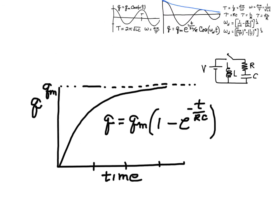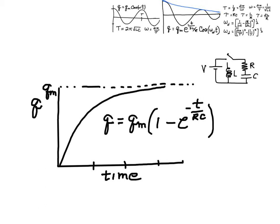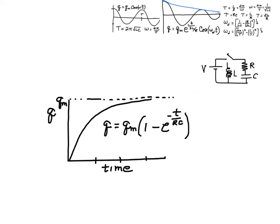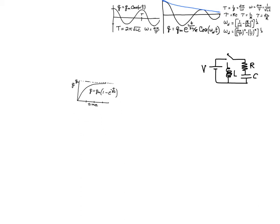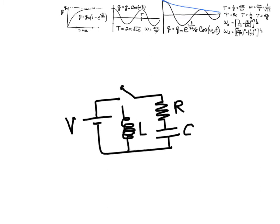So let's just take a look at that. This is the graph of the charge on the capacitor. The time constant is RC. So you're familiar with this behavior, right?